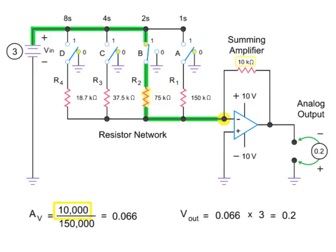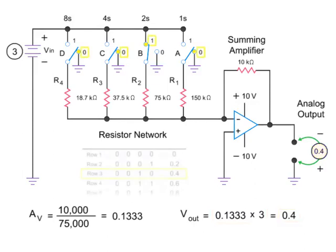Plugging these numbers in the equation gives a gain of 0.1333, resulting in an output of 0.4 volts when the input voltage is multiplied by the gain. Again, this result conforms to what is expected based on the truth table.